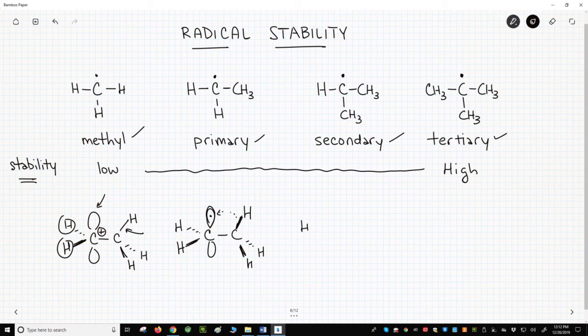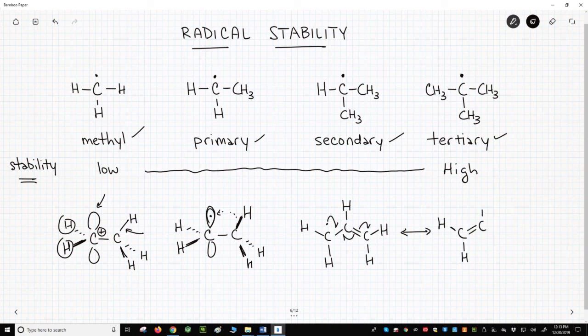Here is a radical that can undergo resonant stabilization. To draw the resonance form, we'll need to use fishhook arrows and move the electrons one at a time to get to our new resonance form.